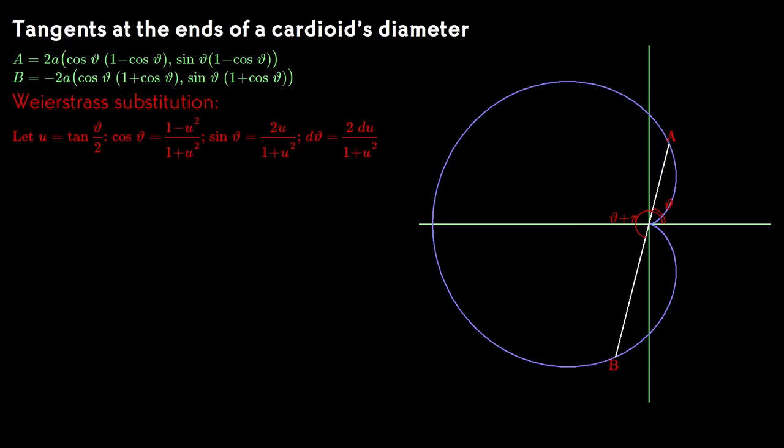We make a change of variable by introducing a parameter u that we set equal to the tangent of 1 half theta. This is a really clever choice. By using the half angle, we don't need to keep track of what quadrant anything is in. And everything in a formula turns from trigonometric functions to rational functions.